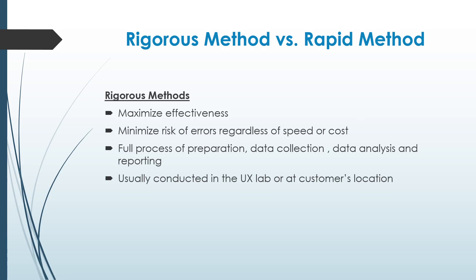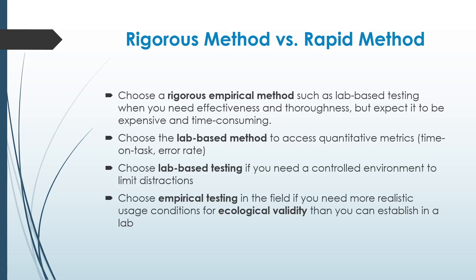The rigorous method is the most effective — it minimizes errors, but the cost is high and it is more time consuming because we consider all phases of the activities without skipping any. Rigorous method is always done in lab-based testing, providing a controlled environment to limit distraction, and we can have quantitative measures such as error rate. We can also use empirical testing if we need more realistic usage, as empirical is to see how the system works in the real environment.